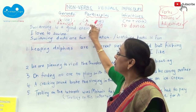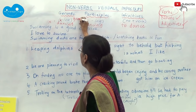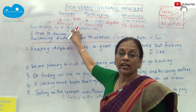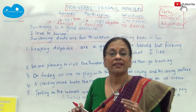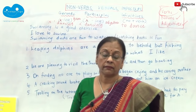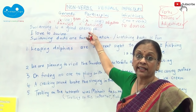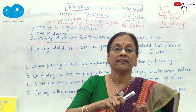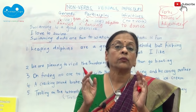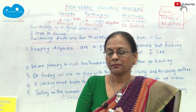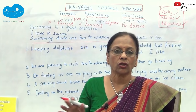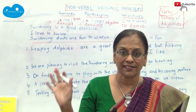Now, gerunds are nouns and participles are adjectives — that's the difference. Although it's the same word, gerunds are nouns and participles are adjectives. When are they adjectives? When they come on their own. So if I say 'is dancing,' it's a verb — the verb is made up of the auxiliary and 'dancing.' The -ing word there is also called a participle, but it will make a verb only if there is a helper. Without a helper, it remains a participle.